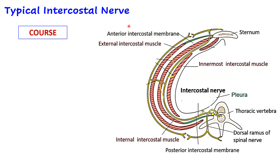Let us look at the course of the typical intercostal nerve. In this diagram we can see the cross section of a typical intercostal space. The anterior end has the sternum and the posterior end has a thoracic vertebra. Within the vertebral foramen or vertebral canal lies the spinal cord. This is the anterior root and this is the posterior root of the spinal nerve, where we can see the dorsal root ganglion. The anterior (motor) root and posterior (sensory) root join to form the spinal nerve, which then divides into a posterior ramus and a ventral ramus — this ventral ramus is the intercostal nerve.